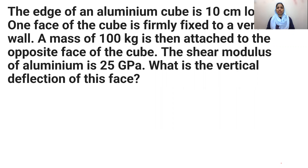The edge of an aluminum cube is 10 cm long. One face of the cube is firmly fixed to a vertical wall. A mass of 100 kg is then attached to the opposite face of the cube. The shear modulus of aluminum is 25 giga pascal. What is the vertical deflection in this face?